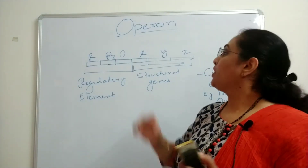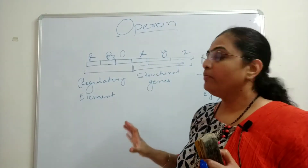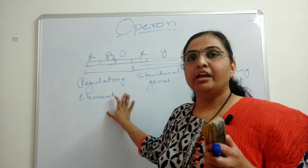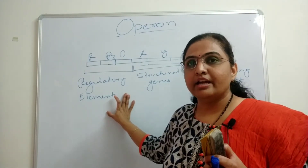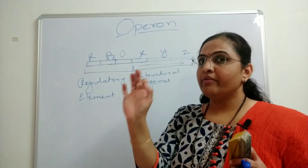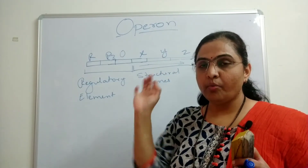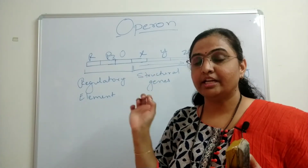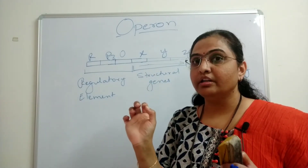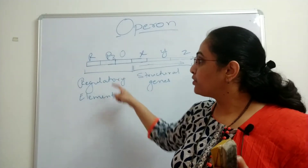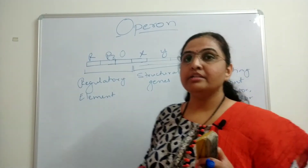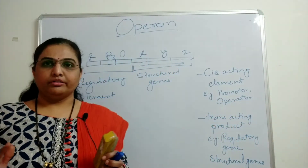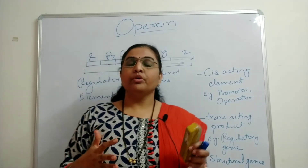So what do we mean by the operon? An operon is a system in which structural genes (plural — genes, not a single gene) are under the control of regulatory elements. That is called an operon.